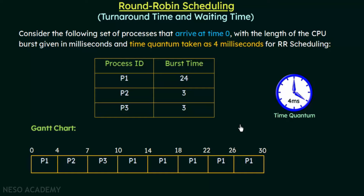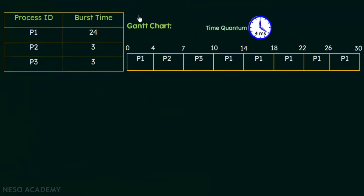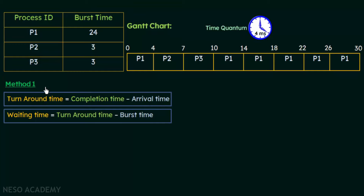Now that we've formed the Gantt chart, let's calculate the turnaround time and waiting time for round robin scheduling. There are two methods. The first method uses the formula also used for other scheduling algorithms: turnaround time = completion time − arrival time, and waiting time = turnaround time − burst time. This method is useful when you need to calculate both turnaround time and waiting time.